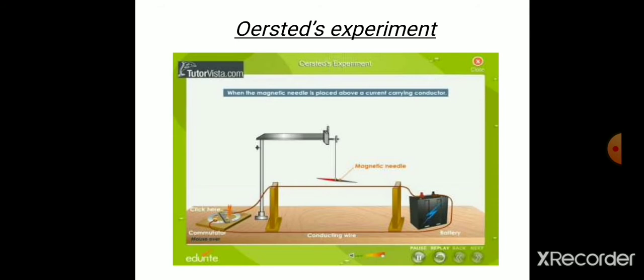You might have studied about Oersted's experiment in class 10. According to Oersted, a current carrying conductor will create a magnetic field around it, and if a compass needle is kept near this current carrying conductor, it will show a deflection due to the presence of this magnetic field. This experiment actually relates electricity and magnetism.